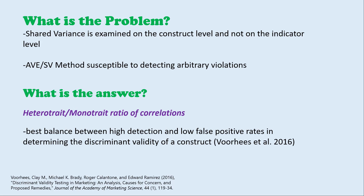The answer is a technique called the heterotrait-monotrait ratio of correlations. Instead of looking at shared variance at the construct level, it looks at it at the individual indicator level across constructs, giving more specificity and the best balance between high detection and low false positive rates. If you're looking for more information, Clay Voorhees published a great simulation study showing why heterotrait-monotrait is superior to average variance extracted versus shared variance.